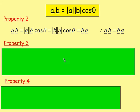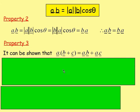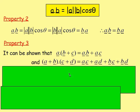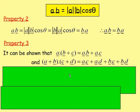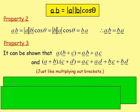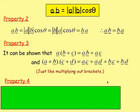Property three: it can be shown — there are proofs for this — that A dot (B plus C) is the same as A dot B plus A dot C. Taking that further, (A plus B) dot (C plus D) is the same as A dot C plus A dot D plus B dot C plus B dot D. In other words, it's the same as just multiplying out the brackets the way you've been doing for years.